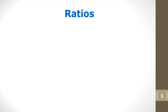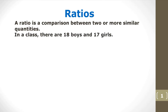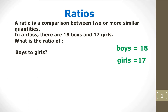Ratios. A ratio is a comparison between two or more similar quantities. Let's say in a class there are 18 boys and 17 girls. What is the ratio of boys to girls? You know that there are 18 boys and 17 girls, so therefore the ratio of boys to girls is 18 to 17.